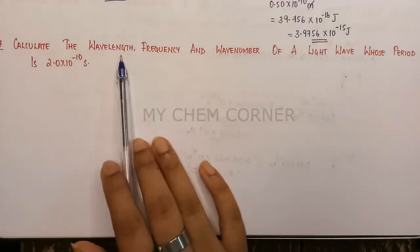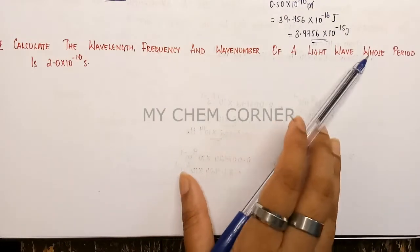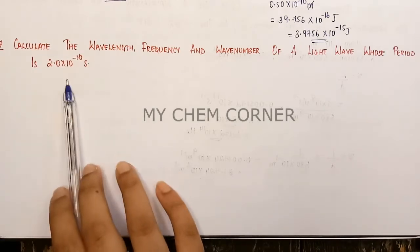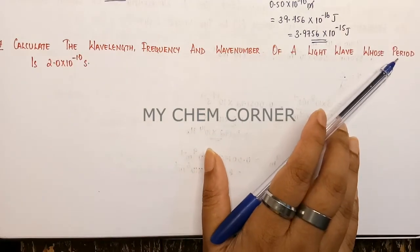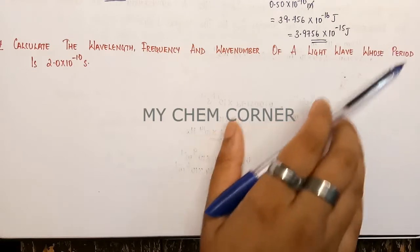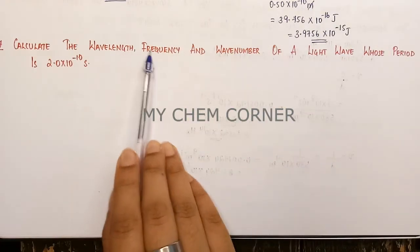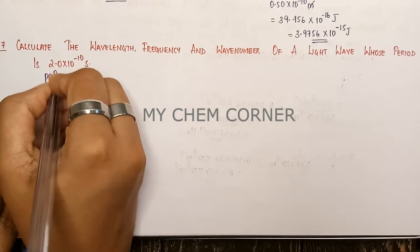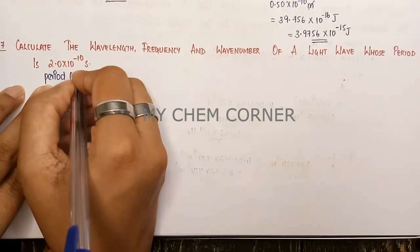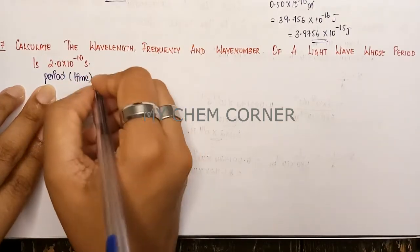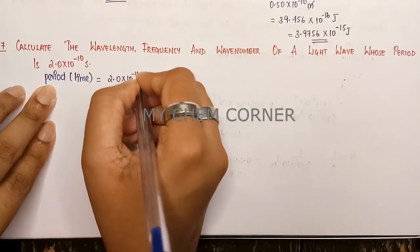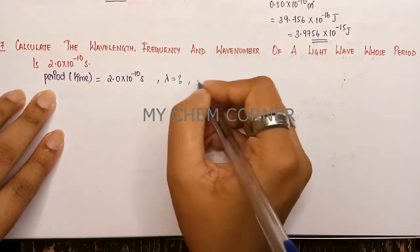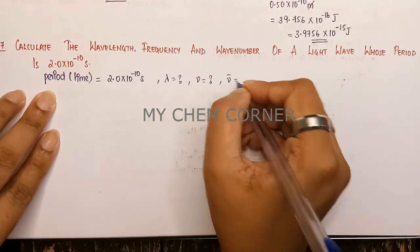The question asks us to calculate the wavelength, frequency, and wave number of a light wave whose period is 2.0 × 10⁻¹⁰ seconds. So, what is given to us is the period — period meaning time — and from that we need to calculate wavelength, frequency, and wave number.